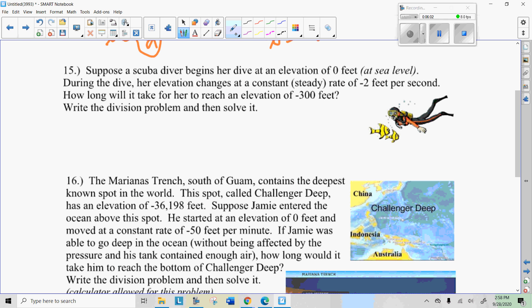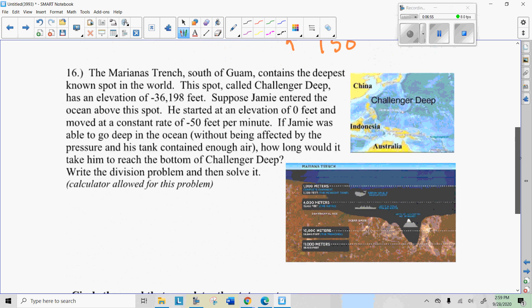All right, so, suppose a scuba diver begins her dive at an elevation of 0 feet, that is sea level. During the dive, the elevation changes at a constant rate of negative 2 feet per second, so she's diving down. How long will it take her to reach negative 300? The equation for that would be, we want to split that negative 300 total dive by the 2 feet that she dives per second, so that's a division problem. And so, now we have to think of what number times negative 2 equals 300, and when you're dividing by 2, you're looking at half of it. Now, a negative divided by a negative is a positive, so half of 300 is 150.